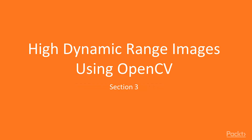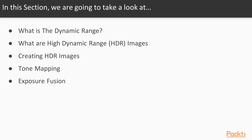Let's learn how to use OpenCV to create high dynamic range images. In this section, we learn about the dynamic range of photographs and learn how to create and display high dynamic range images. High dynamic range images are created from multiple photographs shot with different exposures. We'll see the process needed to merge them into a single HDR image and how that image can be displayed.